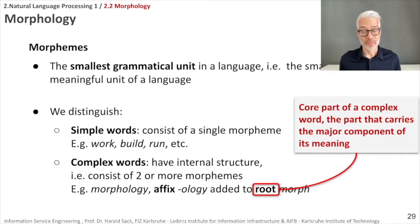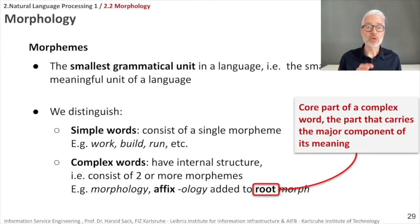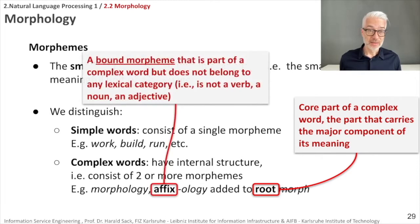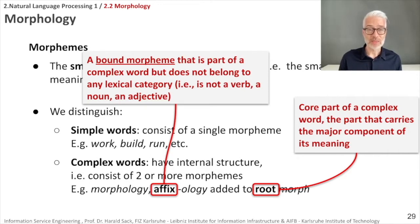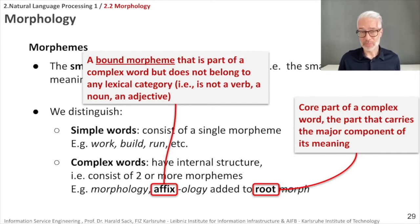Let's look more closely at morphemes. The root is the core part of a complex word — it carries the major component of the word's meaning. The affix, on the other hand, is a so-called bound morpheme. It is part of a complex word but does not belong to any lexical category — it is no verb, noun, or adjective; it simply modifies the root.